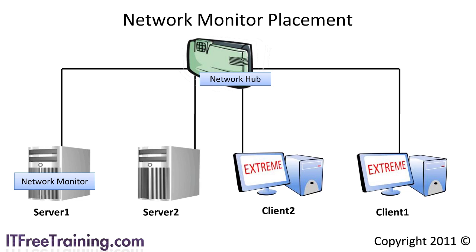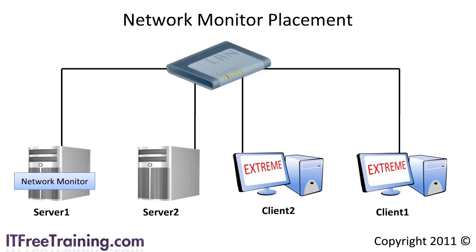In the real world, hubs are old technology and your network is more likely to have switches installed. Switches direct traffic only to the computers that require it, so server 1 would not see traffic destined for server 2. To get around this, many modern switches allow you to configure a monitor port. A monitor port receives a copy of all data sent through a nominated port, so traffic from client 1 to server 2 can also be sent to server 1.